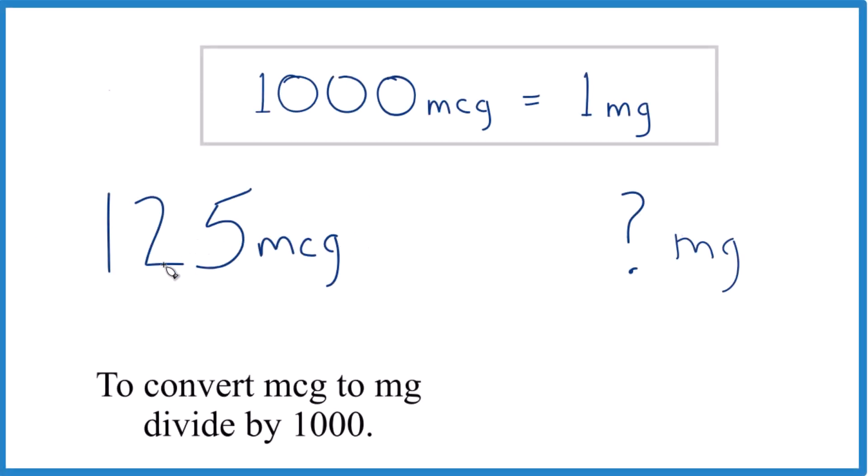So in this video, we're going to convert 125 micrograms (MCG) to milligrams. And the one thing we need to know to do that is that there are 1,000 micrograms in one milligram. So that's our conversion factor, and we just need to know that.